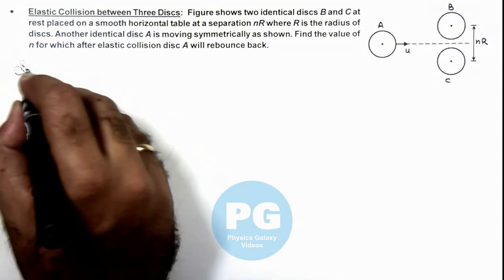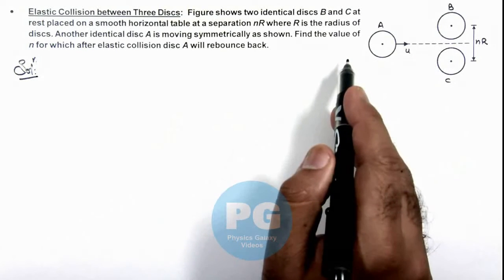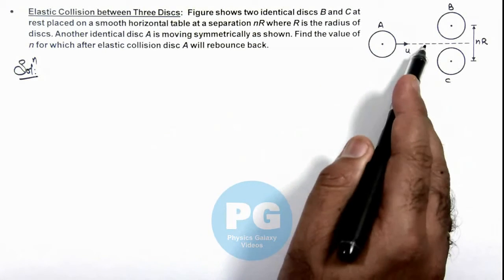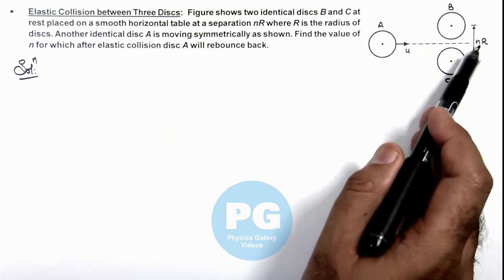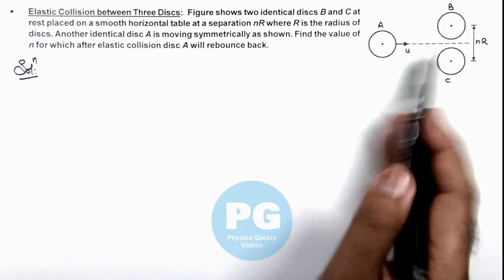In this situation, if we wish to find the value of n for which A will rebound back, we find the condition for which A will come to rest after collision. So if the value of n will be less than that, the impulse on A will be more and it will bounce.